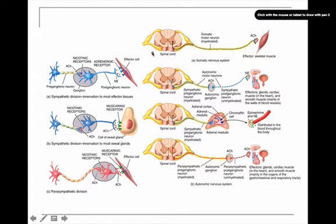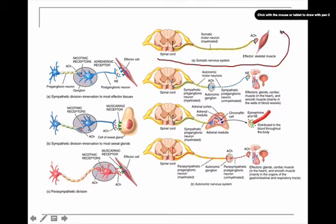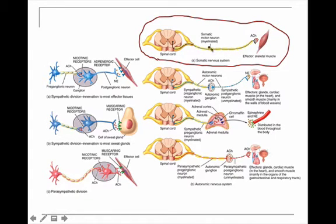I decided to record this video and explain about the confusion that you had. The first part here is the somatic nervous system, which is completely different. It's a one-neuron pathway with no ganglion between — it goes straight to the effector, which is mostly skeletal muscle. The neurotransmitter is acetylcholine, and the neurons are myelinated. This is completely different from the autonomic nervous system.